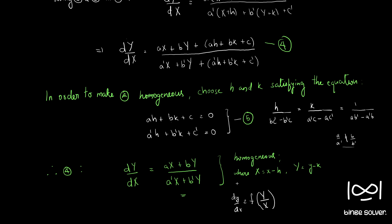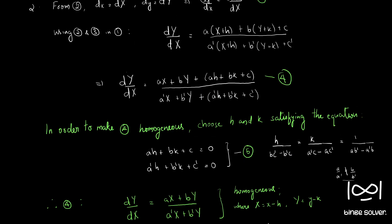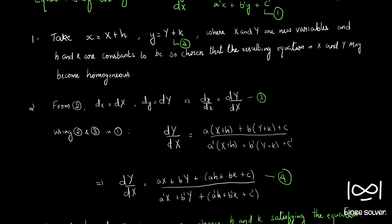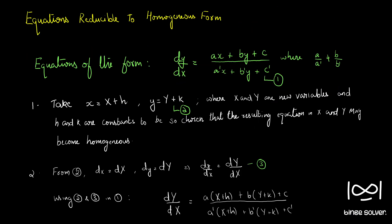Once we solve the question and get the final answer, we substitute capital X for (small x − h) and capital Y for (small y − k), so the final answer will be in terms of small x and small y only. These are the steps we follow to solve questions of this form. From the next video onwards, we will start taking questions that can be solved using these steps — equations that are reducible to homogeneous form.